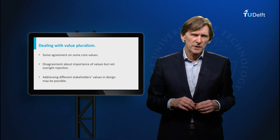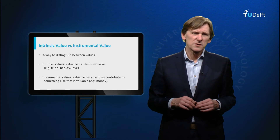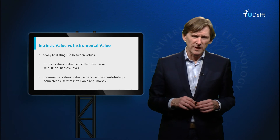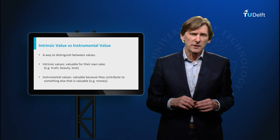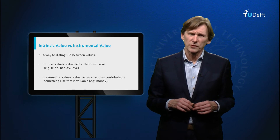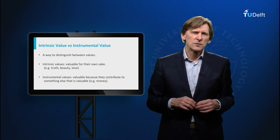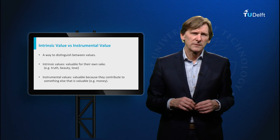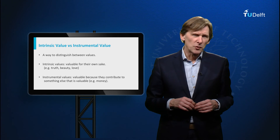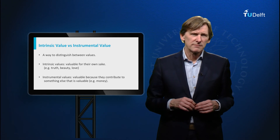When it comes to the question of which values are most important, philosophers often make a distinction between instrumental values and intrinsic values. Instrumental values are values that are important for the sake of something else — money, for example, is often seen as instrumentally valuable because it helps us to attain other important goals and values in life. Intrinsic values are values that are important for their own sake and not to attain something else. Typical examples are human well-being, justice, beauty, honesty, and truth.